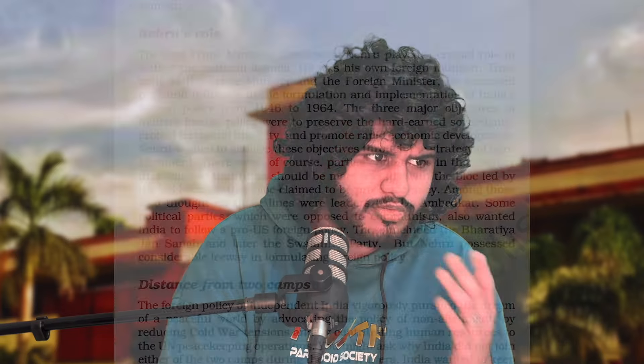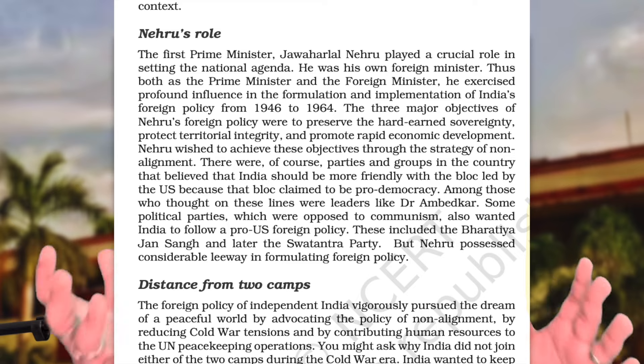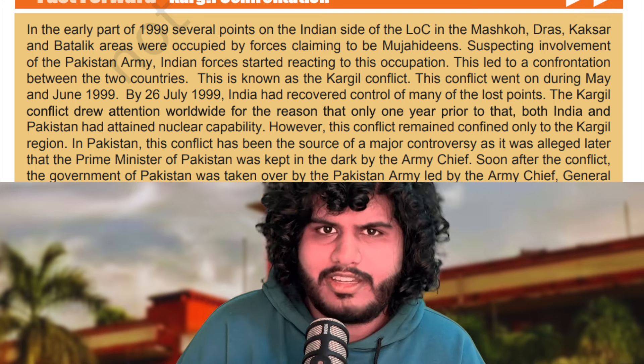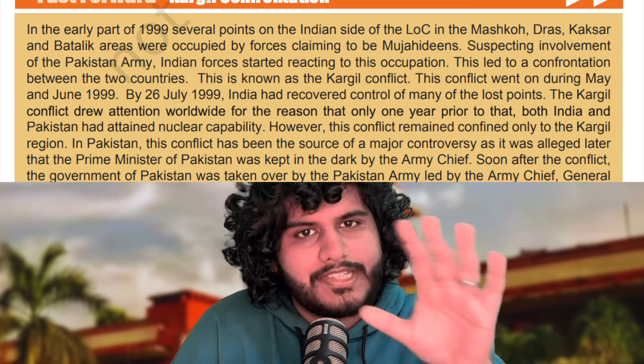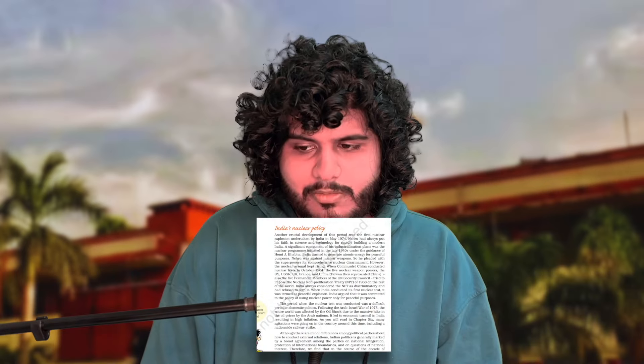Then move on to India's External Relations, a 6-mark chapter. Article 51 on page 56 is important. Policy of non-alignment — also covered in Book 1 — can come as a 2 or 4 marker, including Nehru's role and camp distance. Afro-Asian unity can come as a 2-marker. The Tibet issue and Chinese issue can be a 6-marker. The 1962 war is a very important event for the exam. The 1971 Bangladeshi war is also important. The Kargil confrontation — in the box — can be a 2 or 1 marker; note the districts where it escalated. India's nuclear policy can come as a 4-marker, and India's nuclear program as a 2-marker.